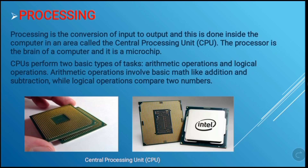The processing operation: processing is the conversion of input to output, and this is done inside the computer in an area called the Central Processing Unit, known as the CPU. The processor is the brain of the computer and it is a microchip. CPUs perform two basic types of tasks: arithmetic operations and logical operations. Arithmetic operations involve basic math like addition and subtraction, while logical operations compare two numbers.